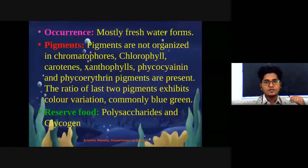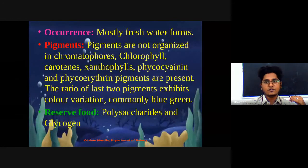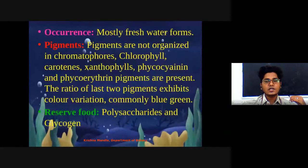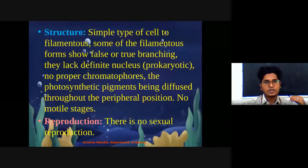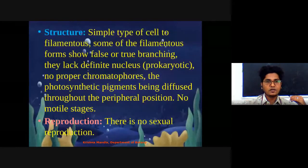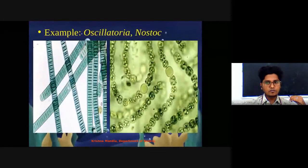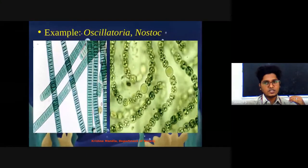To quickly revise: Myxophyceae members are exclusively freshwater forms. They contain various pigments — chlorophyll, carotene, xanthophyll, phycocyanin, phycoerythrin — but the most dominating ones are chlorophylls and phycocyanin. Reserved food material is in the form of polysaccharide or glycogen. Structure is simple, unicellular to filamentous with false branching. There are no chromatophores; pigment is distributed in the peripheral region of the cells. There is no sexual reproduction — reproduction is only by vegetative means. The best examples are Oscillatoria and Nostoc.